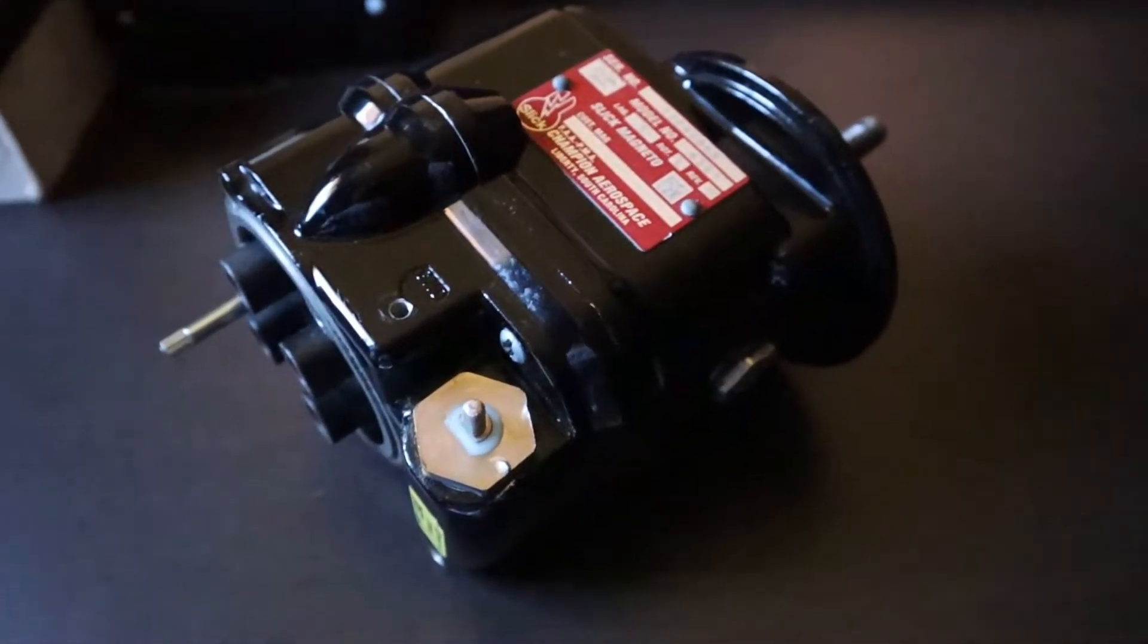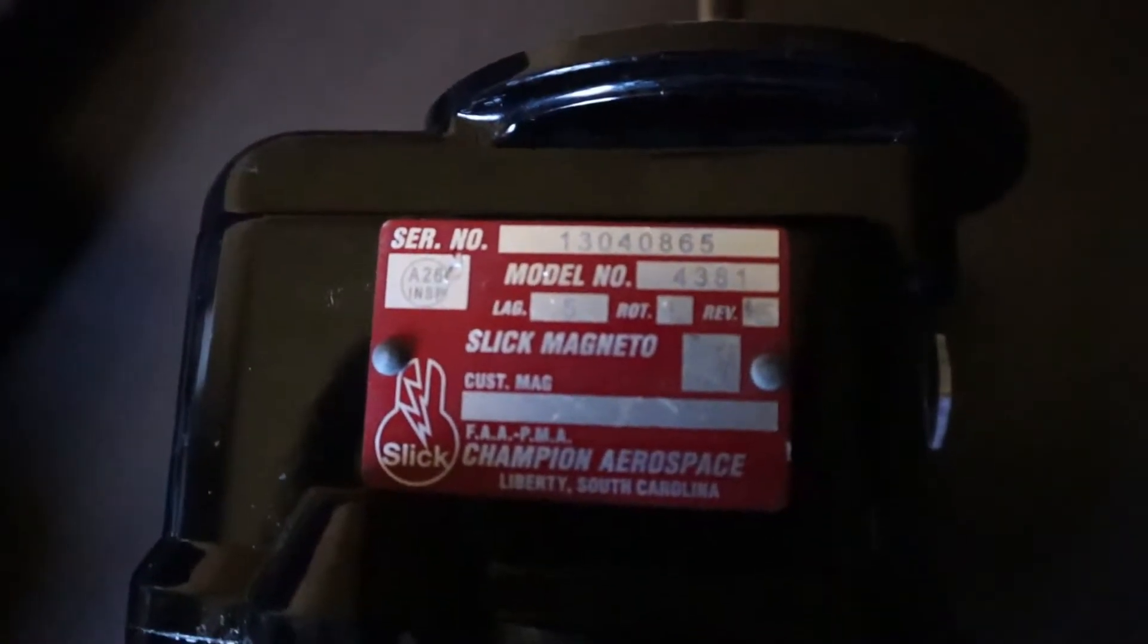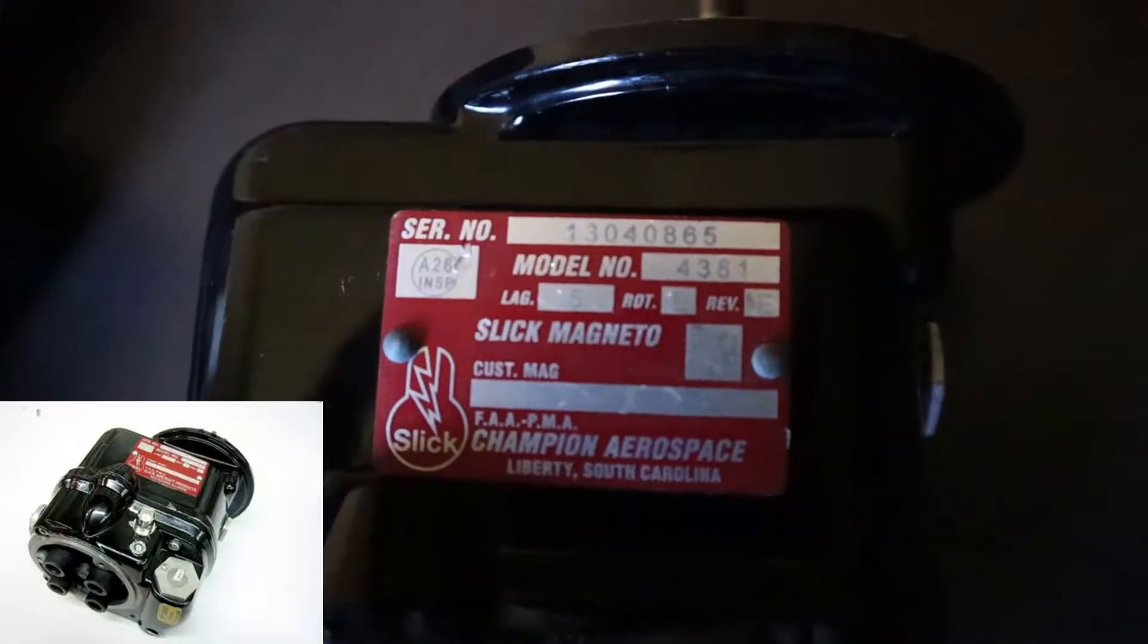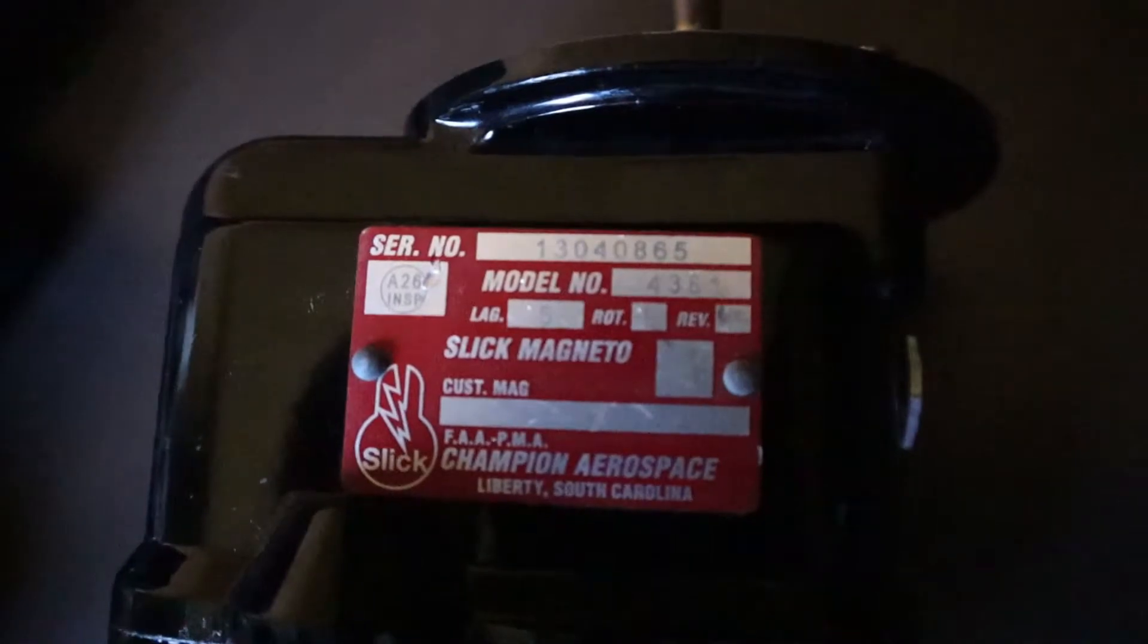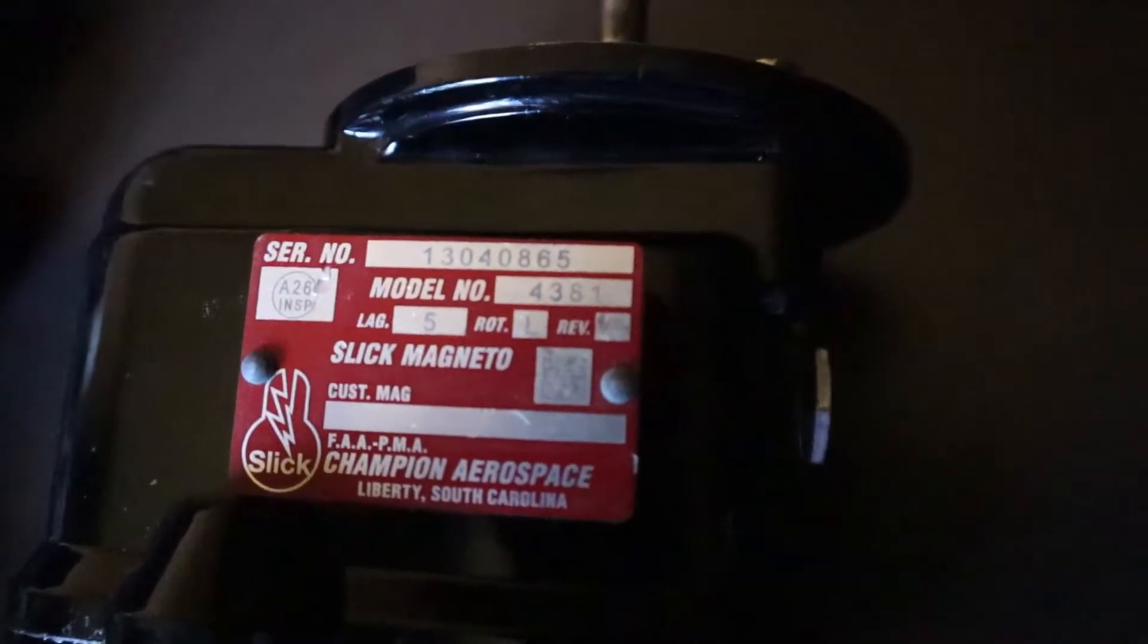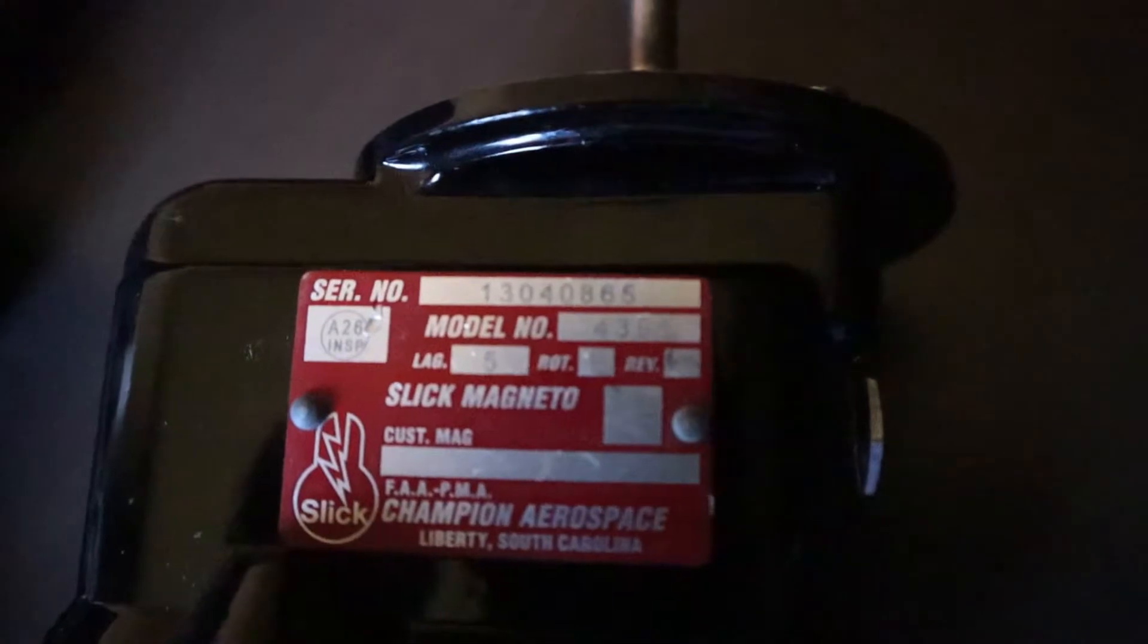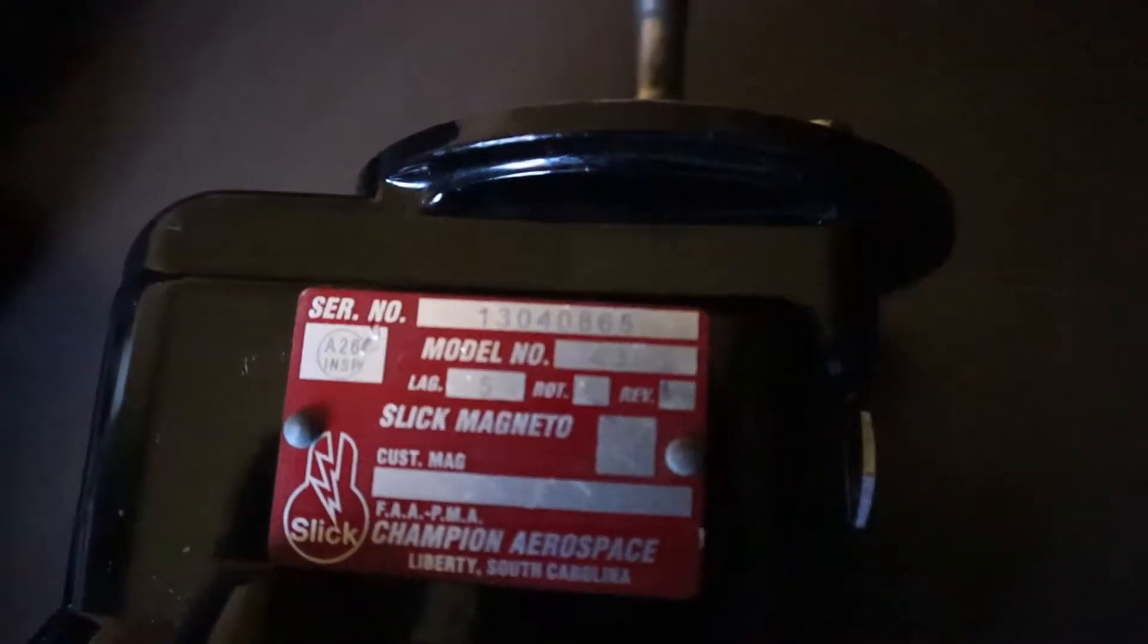This is one type of magneto - this is a Slick magneto. There's also a Bendix magneto which is a little different, same principles though. This is a Slick model 4300 series magneto, specifically this is a 4381. It is a left turning magneto. This model was particularly made in April of 2013, indicated by the serial number right there.